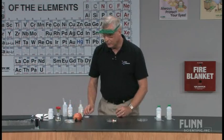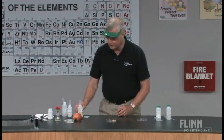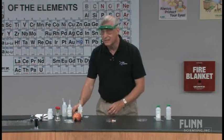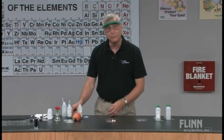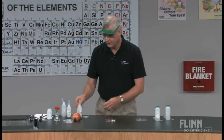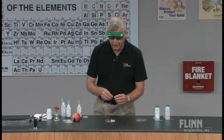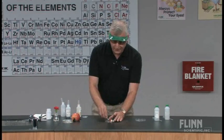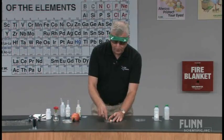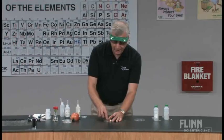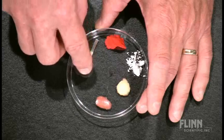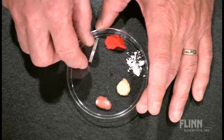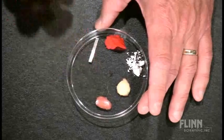Then we're going to take and put a piece of magnesium metal that we've polished so that it's nice and shiny and has a nice reactive surface. And we'll place that in there to represent metals that might be in our environment that we would work with.